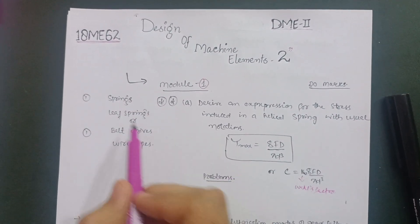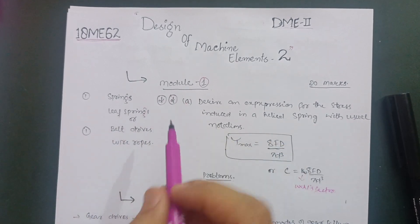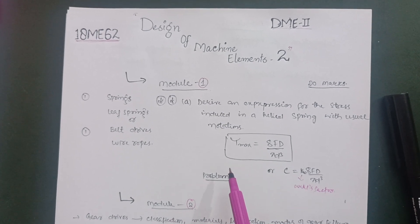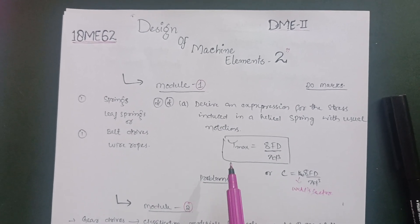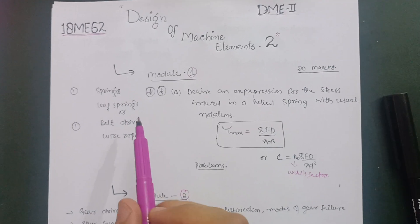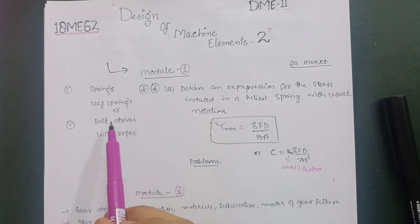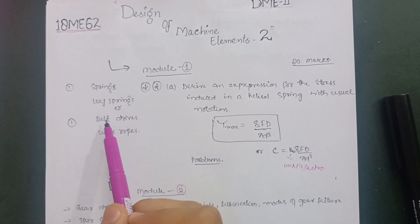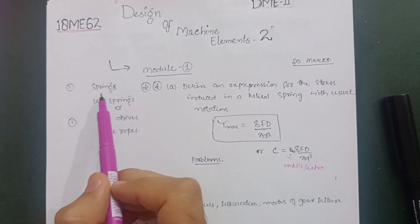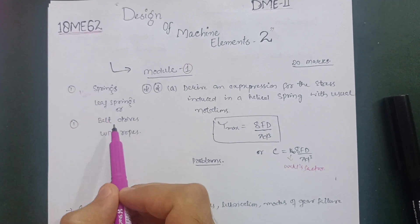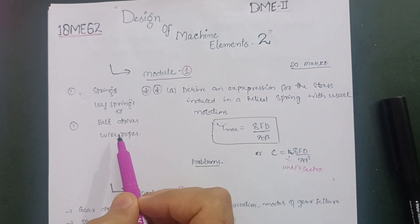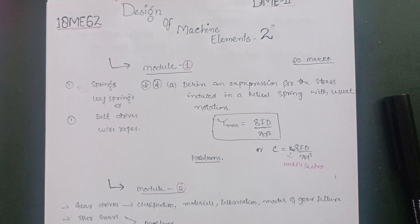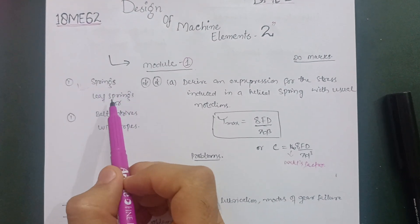The remaining things in Module 1 are problems on springs — leaf springs will also be there. Just go through the spring problems, as these are very easy problems compared to other modules. You only need to use your data handbook. There are also belt drives and wire ropes in the syllabus, but just attempt the spring part as it is easy — don't go for belt drives since there is a vast syllabus there.